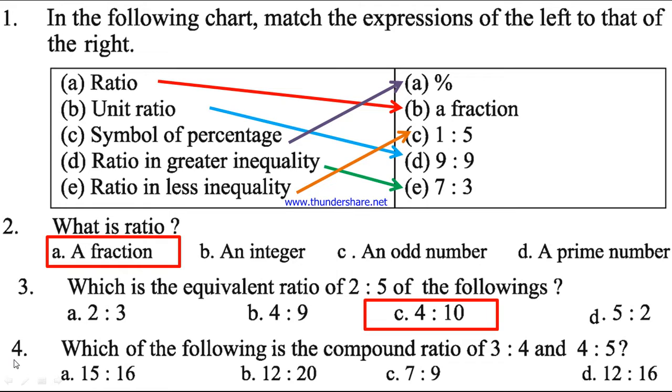Question number 4. Which of the following is the compound ratio of 3 is to 4 and 4 is to 5? Number B, 12 is to 20. Here you have to multiply 3 and 4, and then 4 and 5.